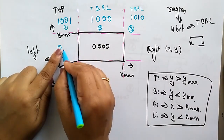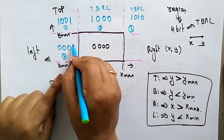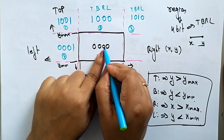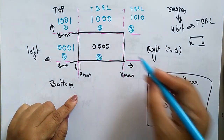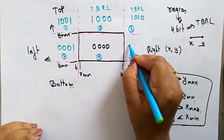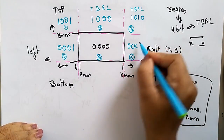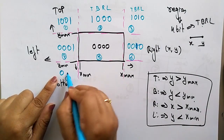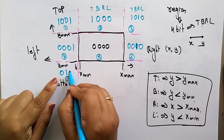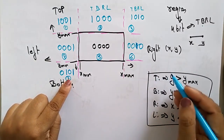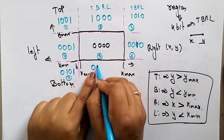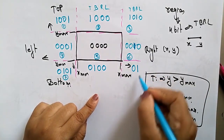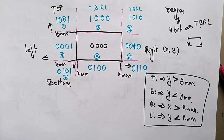Continuing: the bottom-left region has T=0, B=1, R=0, L=1 → code 0101. The bottom-center region has T=0, B=1, R=0, L=0 → code 0100. The bottom-right region has T=0, B=1, R=1, L=0 → code 0110. This is how you write codes for each region based on TBRL.